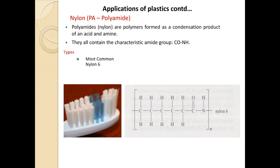Next is polyamide, commonly known as nylon — the most common example being nylon 6. Polyamides are polymers formed as a condensation product of an acid and an amine. We will see the condensation polymerization reaction in detail later, but remember that polyamides are formed by condensation reaction of acid and amine, and they all contain the characteristic amide group: –CO–NH–.